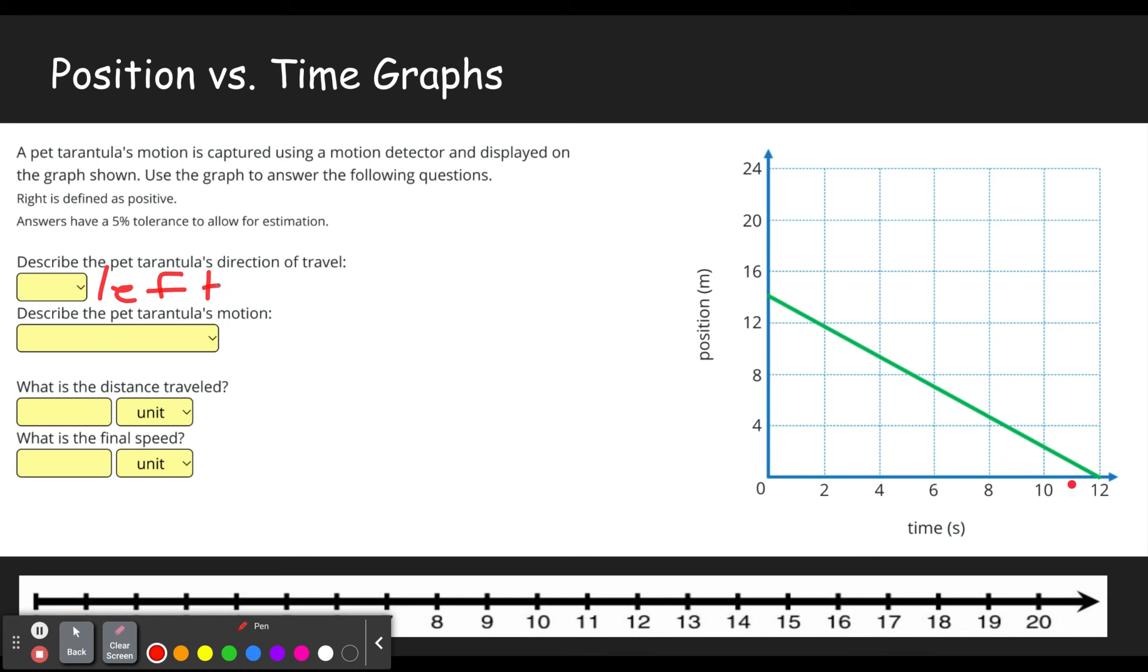Describe the tarantula's motion. So it's either going to be increasing in speed, decreasing in speed, or remaining constant. Or it could be at rest. If it was at rest on a position time graph, we would see a line going straight across. Why does that mean at rest? Well, it's at position 20, it's still at position 20, it's still at position 20. The whole way across, it's at the same place in the room. And so therefore it'd be at rest.